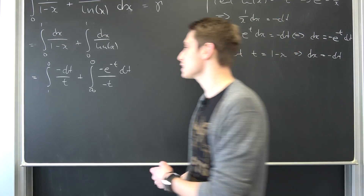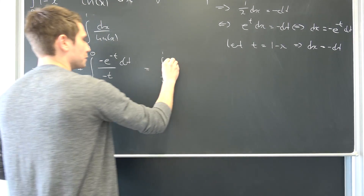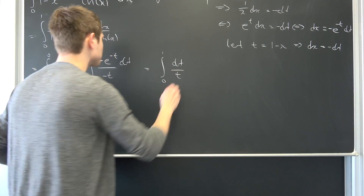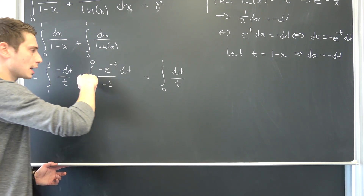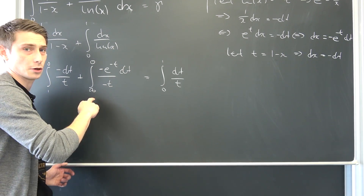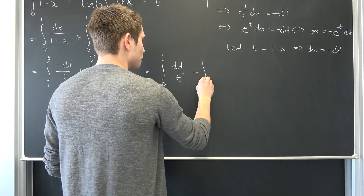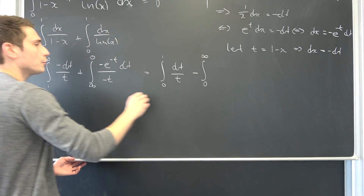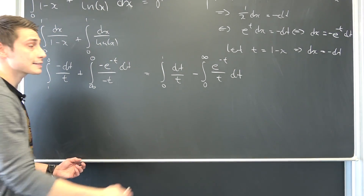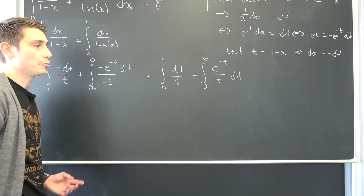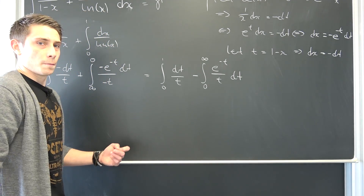We are going to do some upper and lower bound manipulation right now — distributing the negative sign into those bounds to change the order of integration, so we change this from 0 to 1 and this from 0 to infinity. We're going to get an integral running from 0 to 1 of dt over t, and then — bringing one negative sign to the outside — negative the integral from 0 to infinity of e^(-t) over t dt. Like I said, this right here is the exponential integral, ei(x). Maybe you have heard of it before.